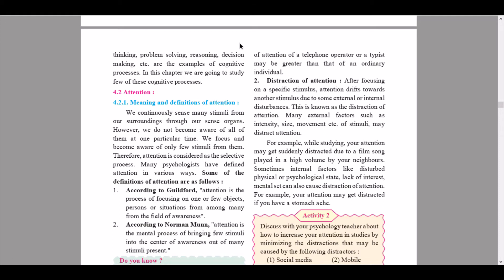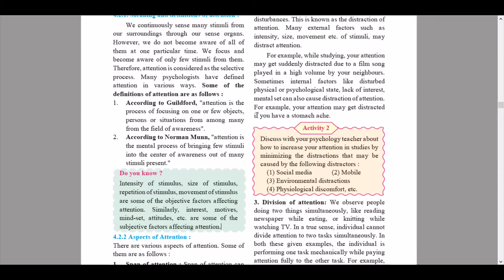Distraction of attention: after focusing on a specific stimulus, attention drifts towards another stimulus due to some external or internal disturbance — this is known as distraction of attention. Many external factors such as intensity, size, and movement of stimuli may distract attention. For example, while studying, your attention may get suddenly distracted due to a film song played at a high volume by your neighbors. Sometimes internal factors like a disturbed physical or psychological state, lack of interest, or mental set can also cause distraction of attention — for example, if you have a stomachache.